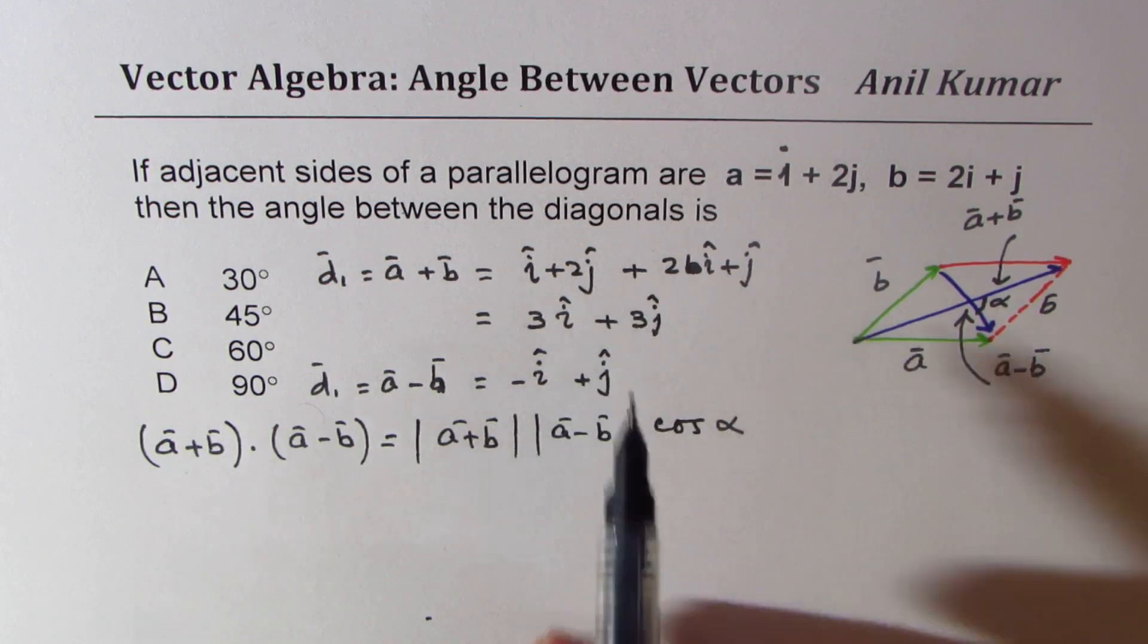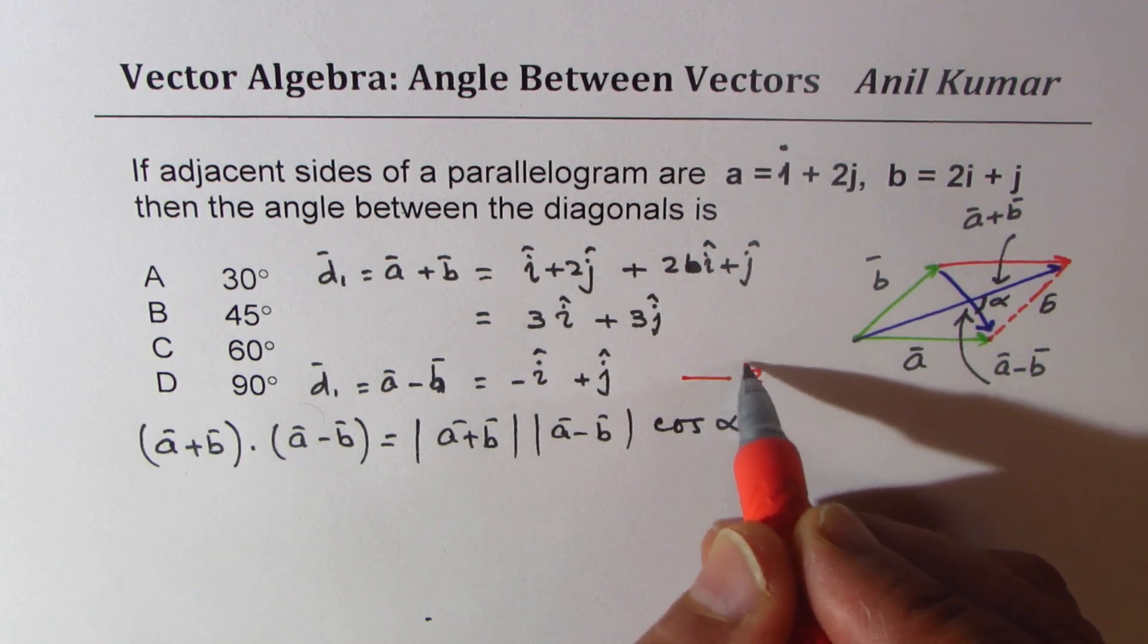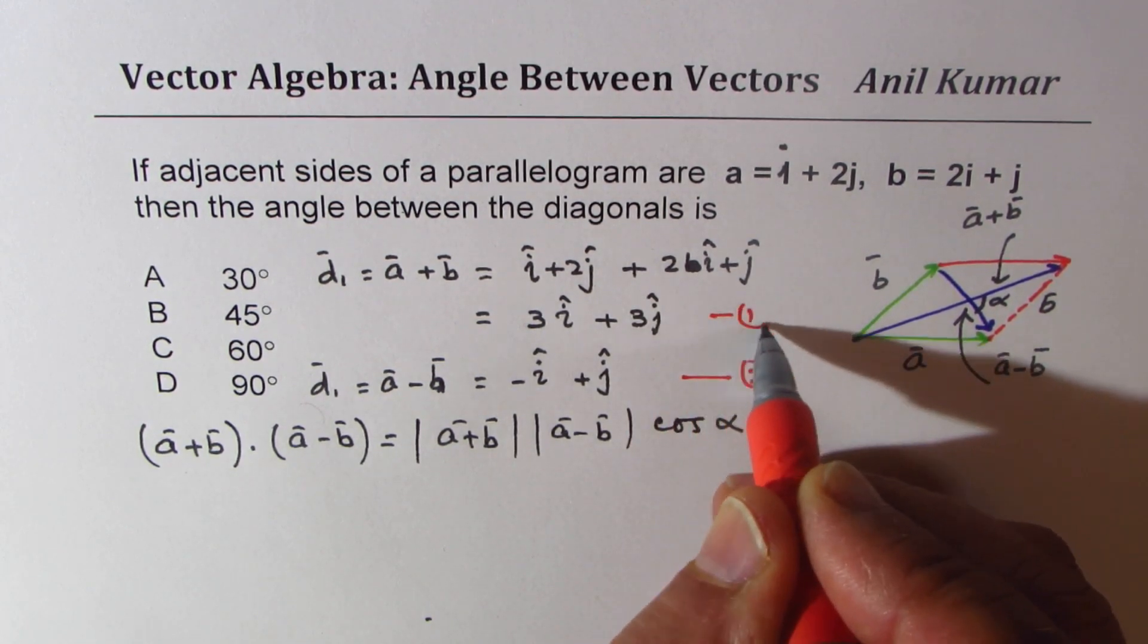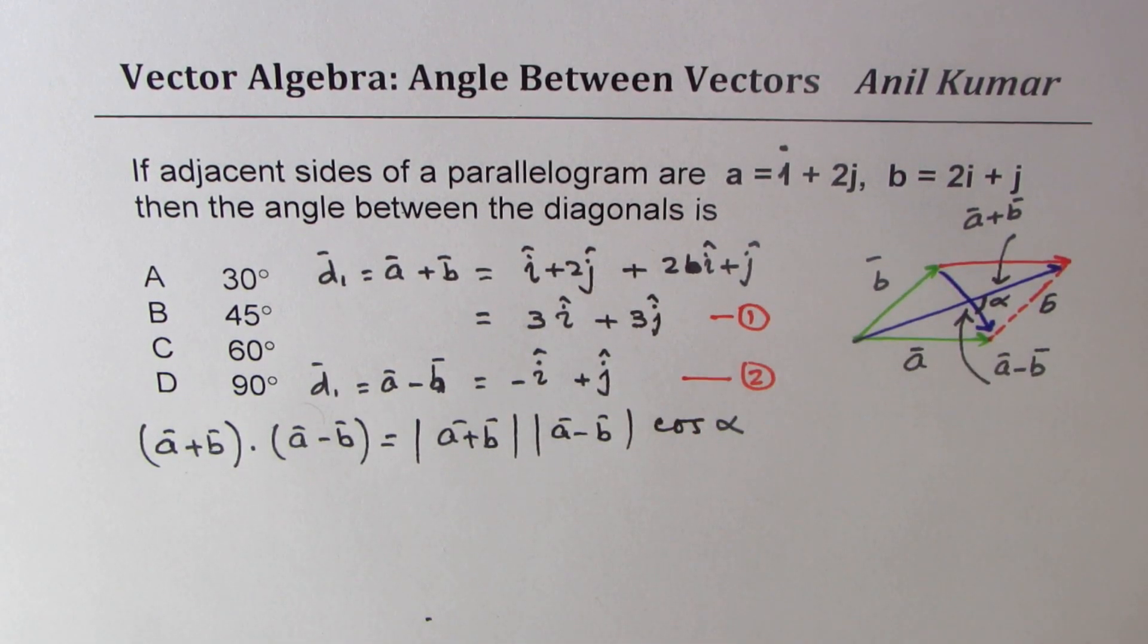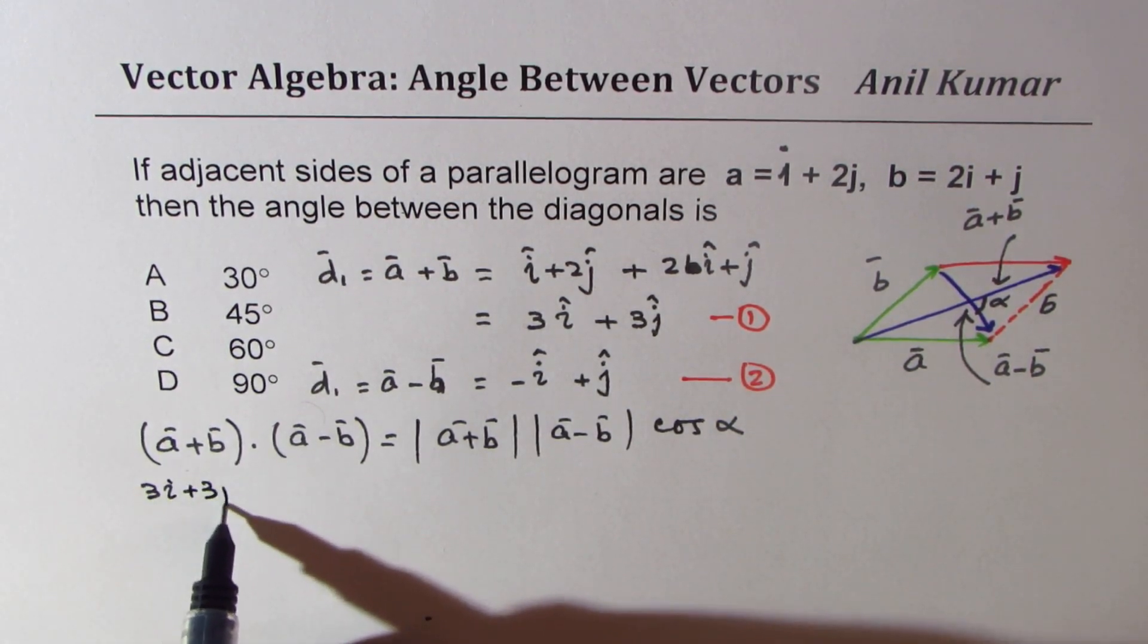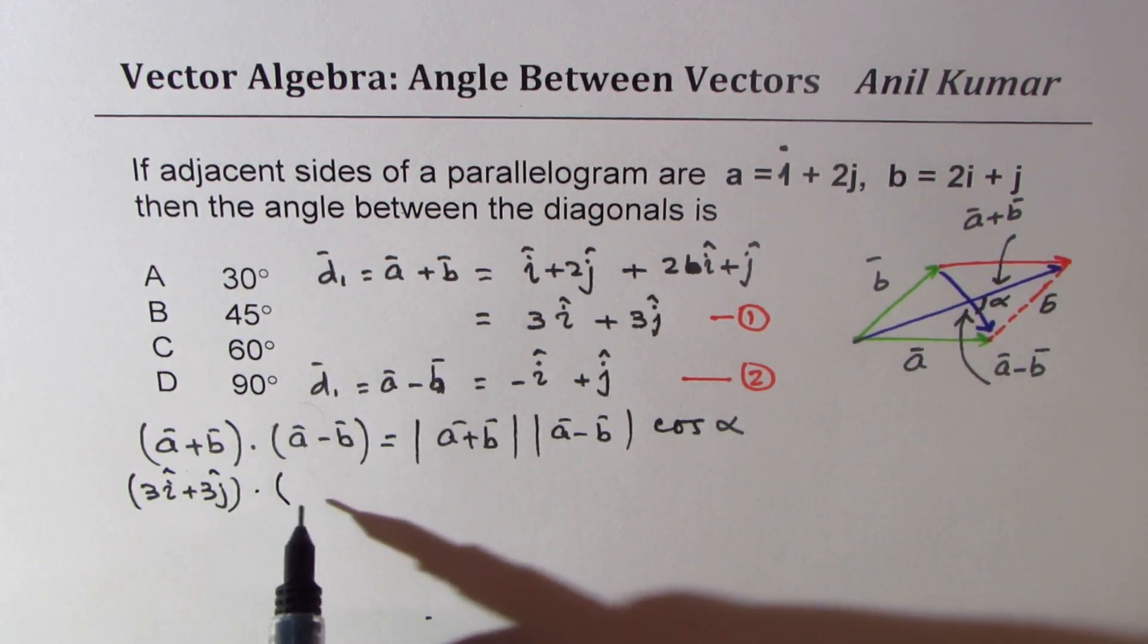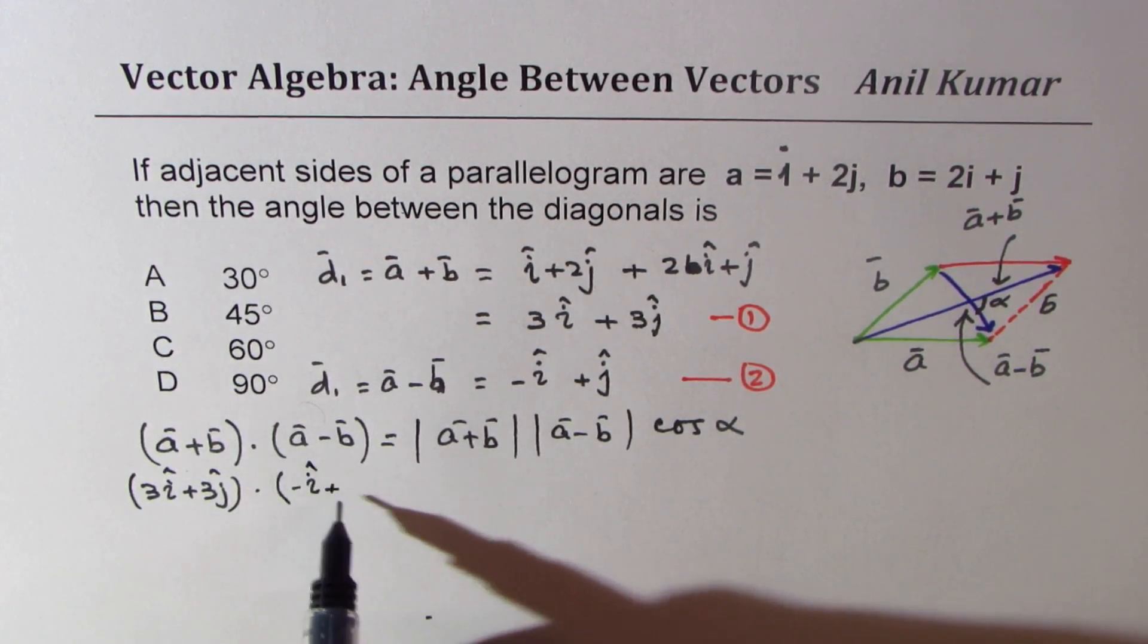Now what is the dot product between these two? We can write down these vectors which we have already found. So let's find the dot product between them. So we have 3i + 3j, the unit vectors, times -i + j.